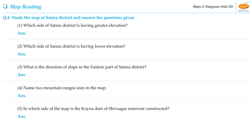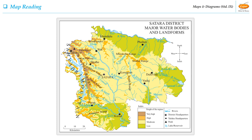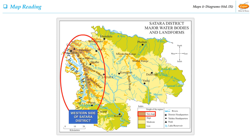Students, let us see the first question of this activity: Which side of Saatara district has greater elevation? The western side of Saatara district has greater elevation.